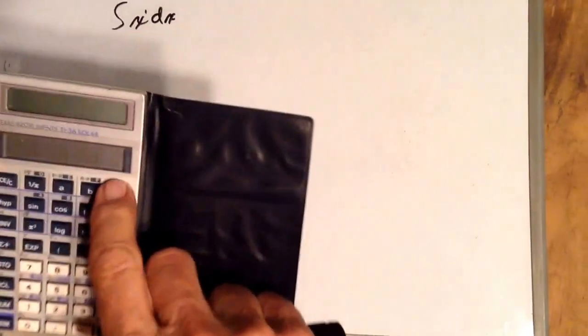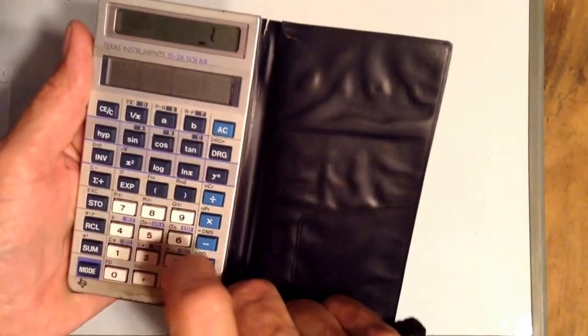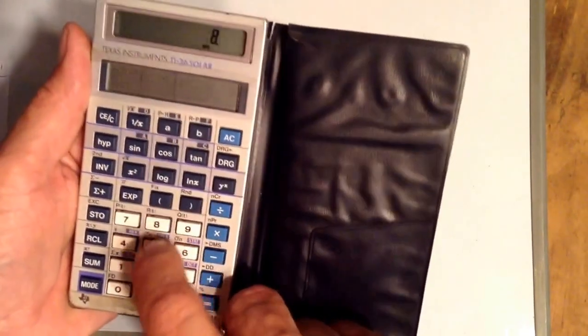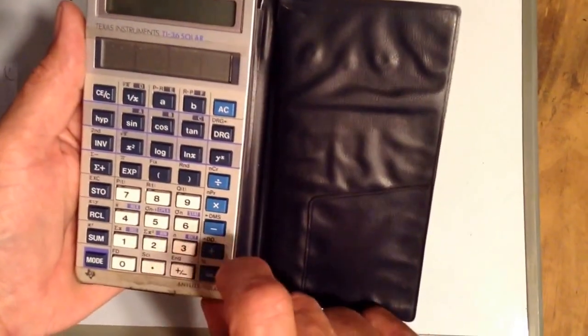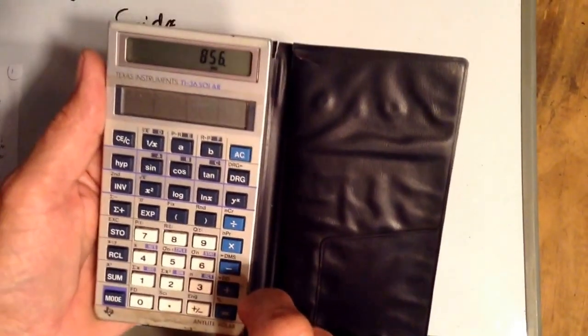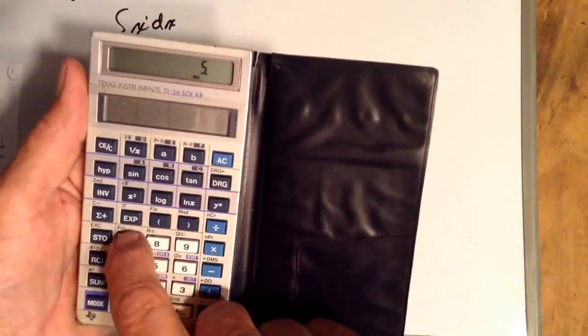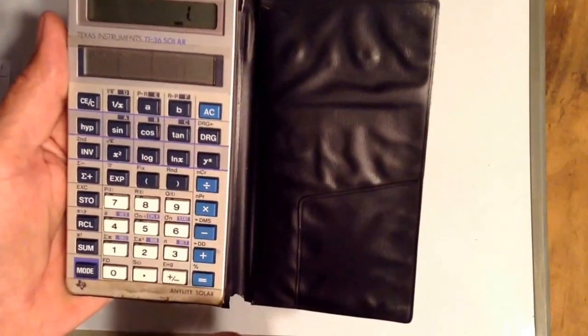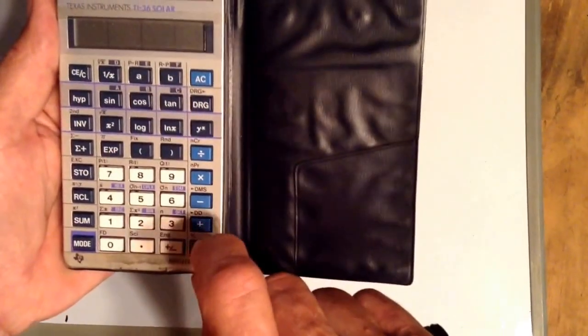Kind of like 2 to the 1 power equals 2. Any number, 856 to the 1 power equals 856. Anything to the 1 power equals itself. Anything to the 0 power is equal to 1. 57 to the 0 power, 2 to the 0 power is 1.